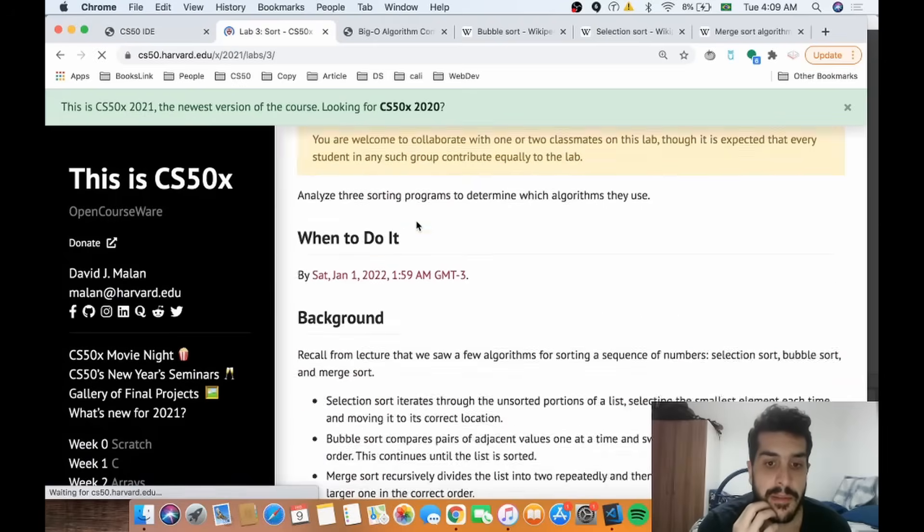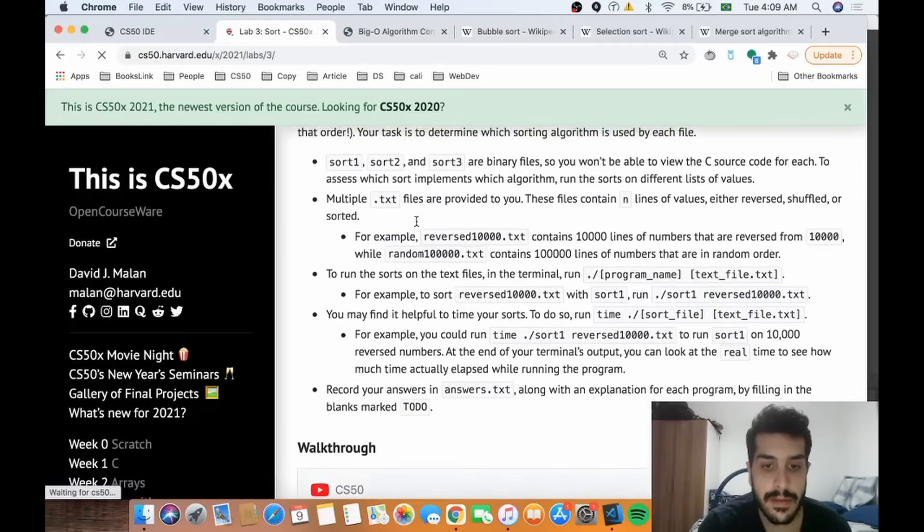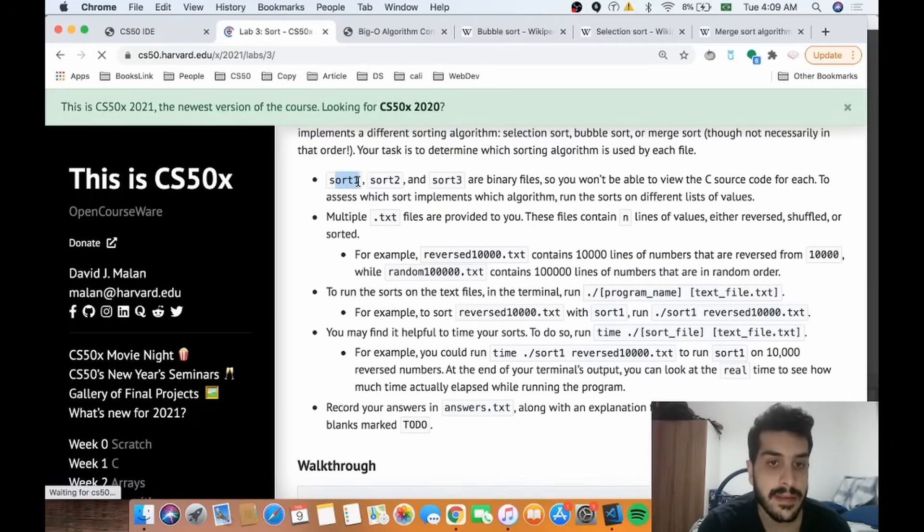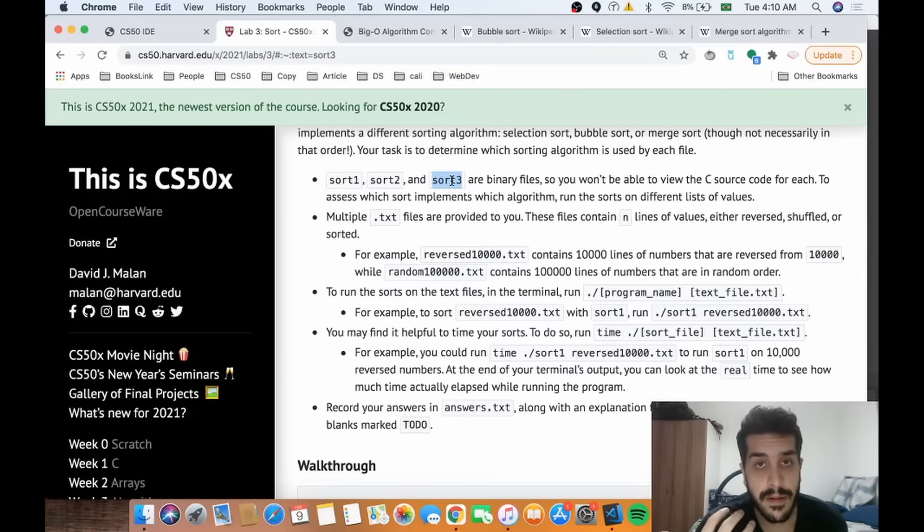So basically, what this problem will ask us to do is to run some mystery sort 1, sort 2, and sort 3 algorithms. We know that one of them will be bubble sort, another will be selection sort, and a third one will be merge sort. Depending on the speed of the algorithm, we'll have to decipher which one is which.